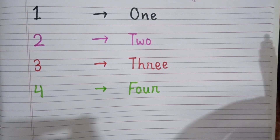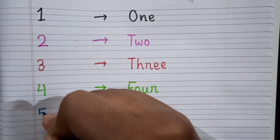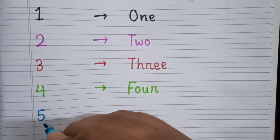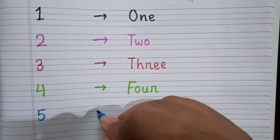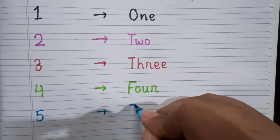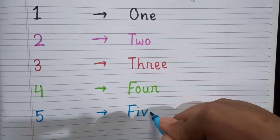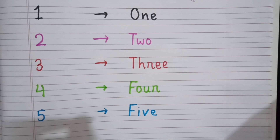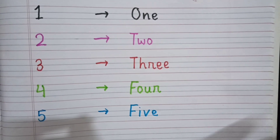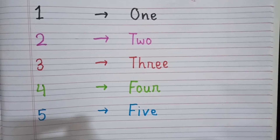After four, the next number is five. This is five, and the spelling of five is F-I-V-E. Five. Okay, so today in this video we have learned from one to five. Please again repeat the numbers with me.